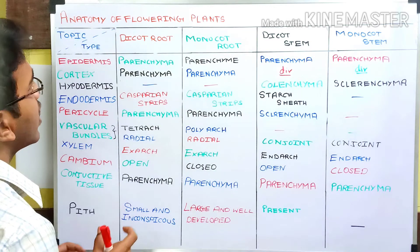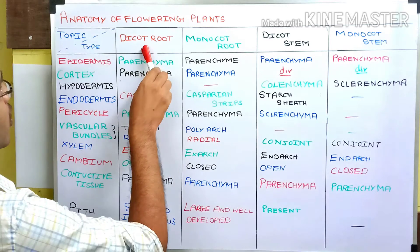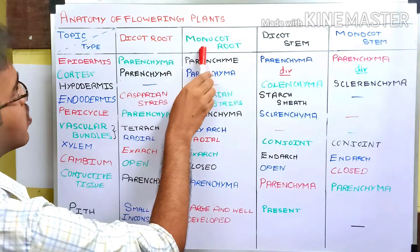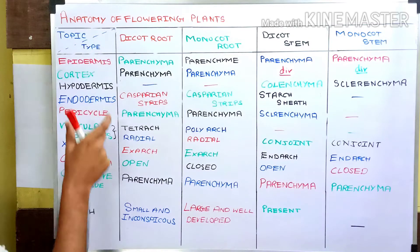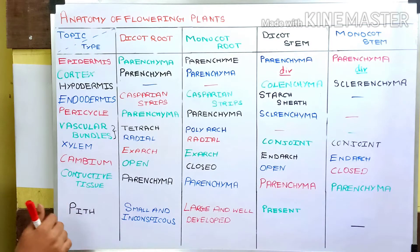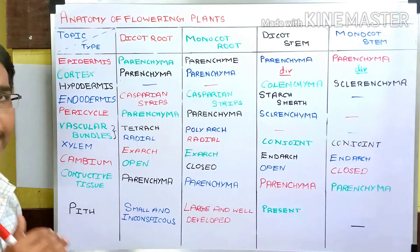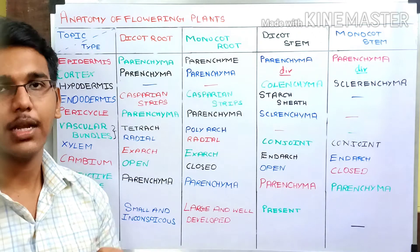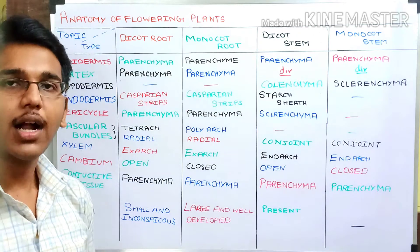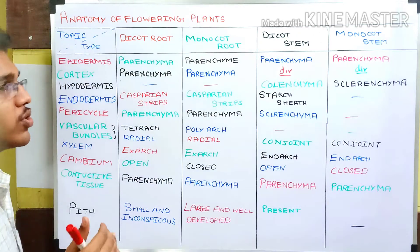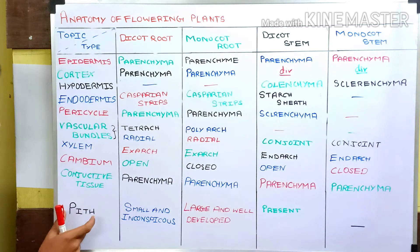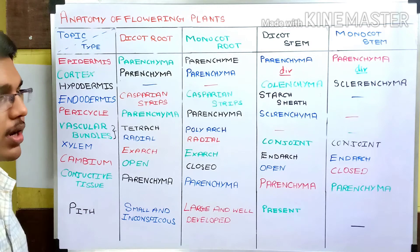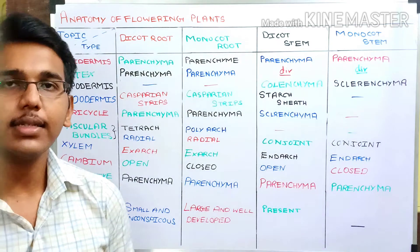In the first row I have written the names: dicot root, monocot root, dicot stem, and monocot stem. In the first column I have written the names of layers present in the root and stem, starting from the outermost layer, the epidermis, and ending with the innermost part, the pith.